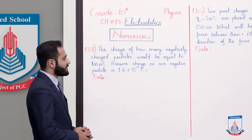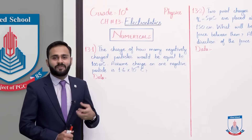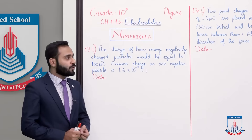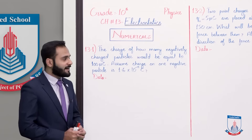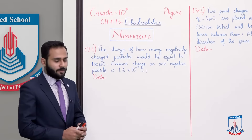Aapne number of charges find karne hain ki kitne negative charge particles joe hain woe equal hoongay 100 micro coulomb ke. Aur ek negative particle pe joh charge hoota hai that is 1.6 multiplied by 10 to the power minus 19 coulomb. So first of all hain data note down kar leete hain.